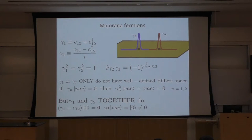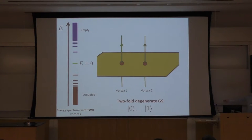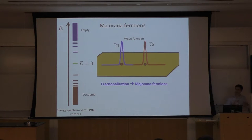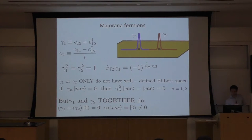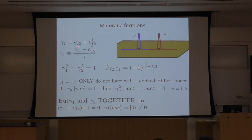More precisely, gamma is defined in terms of the electron operator: C₁₂ creates one electron shared between vortices one and two. I define gamma one as C plus C-dagger, and gamma two as C minus C-dagger divided by i. You can show using these definitions that gamma one squared equals gamma two squared equals one, and i·gamma two·gamma one equals minus one to the number of electrons.